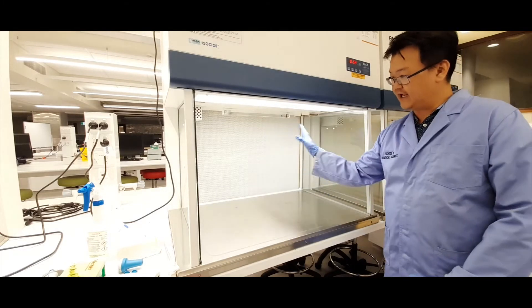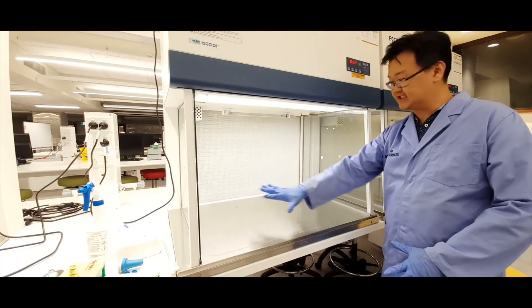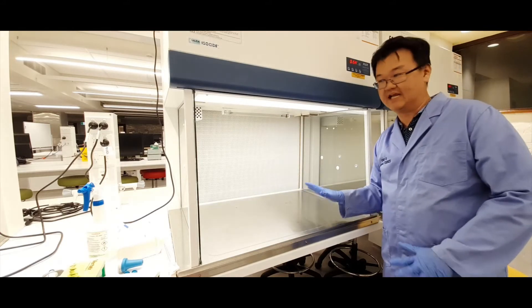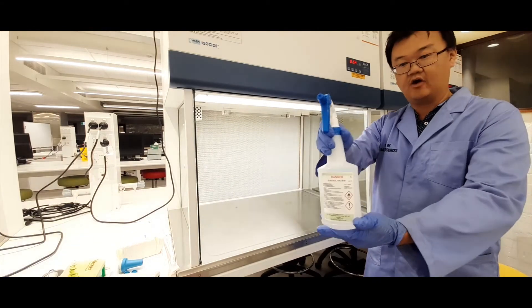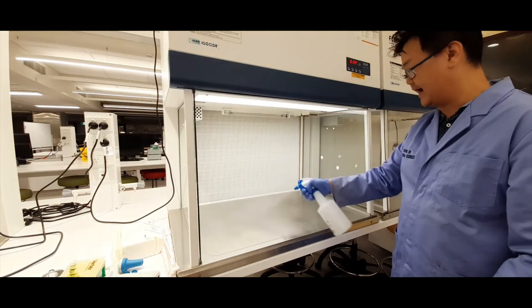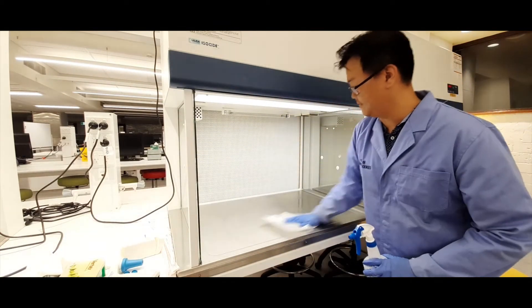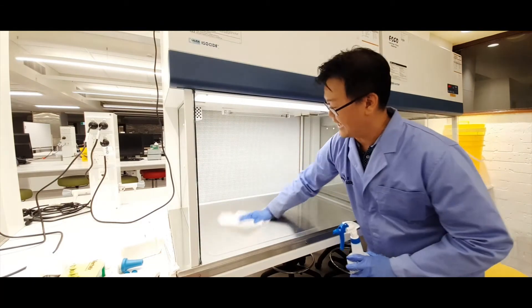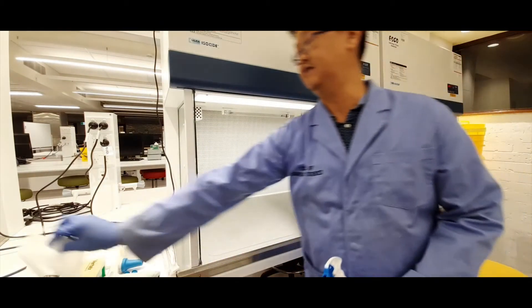Now, even though that UV light was sterilizing this environment, another good practice is to give this surface a spray with 70% ethanol. So I have a bottle of 70% ethanol here. It's good to just give that a spray, and then you get a piece of paper towel just to wipe it down. That's just an extra measure to clean and sterilize that work surface.